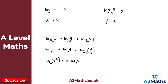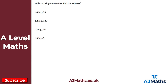So those are the laws of logarithms. Now let's look at finding the value of logarithms without a calculator. We've got log 16 base 4 — what must the power of 4 be to give me 16? That must be 4 squared, so 4 to the power of 2 equals 16. Therefore log 16 base 4 equals 2.